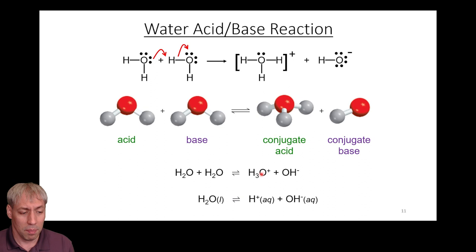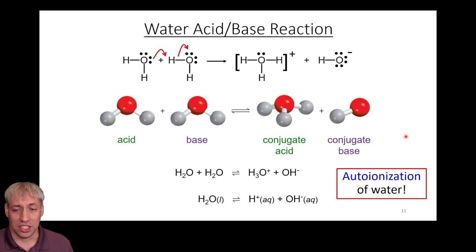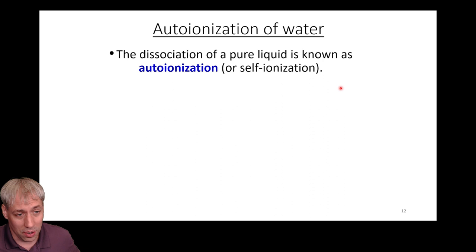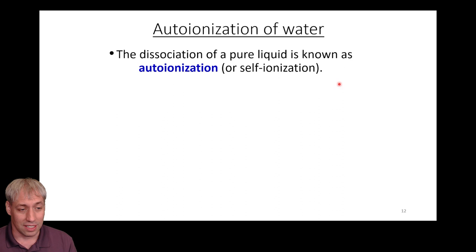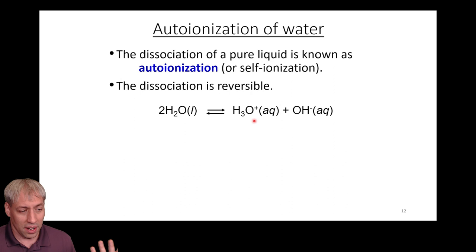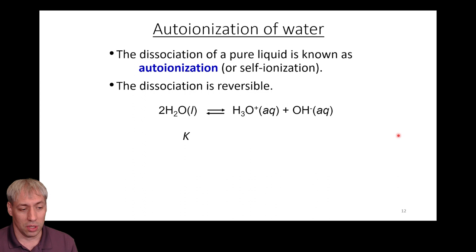This process is known as the auto-ionization of water, or self-ionization. It happens in water all the time — H2O doesn't exist purely as H2O; there's always some H3O+ and always some OH- present. It's a dissociation process where H2O turns into these ions, which can recombine and go back. This is an equilibrium condition, so we can assign an equilibrium constant to it.